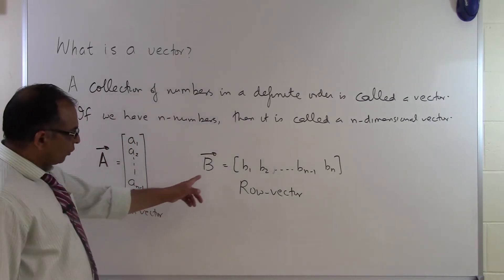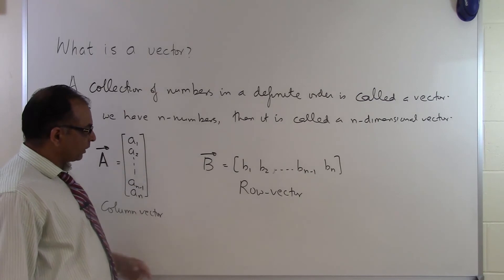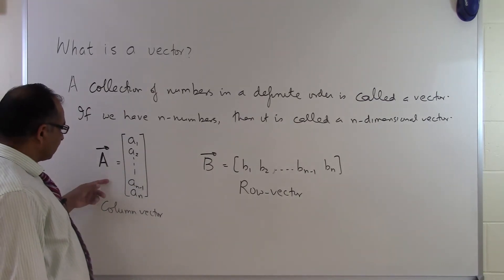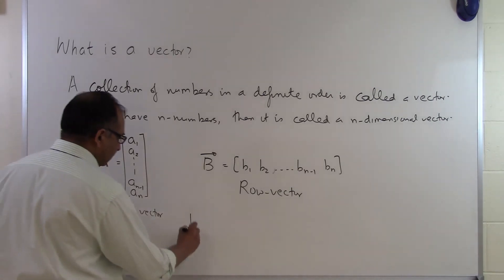It's a row vector because now all the elements are in a row. This one is an n-dimensional vector. This is also an n-dimensional vector. But the difference is that this is a column vector and this is a row vector.